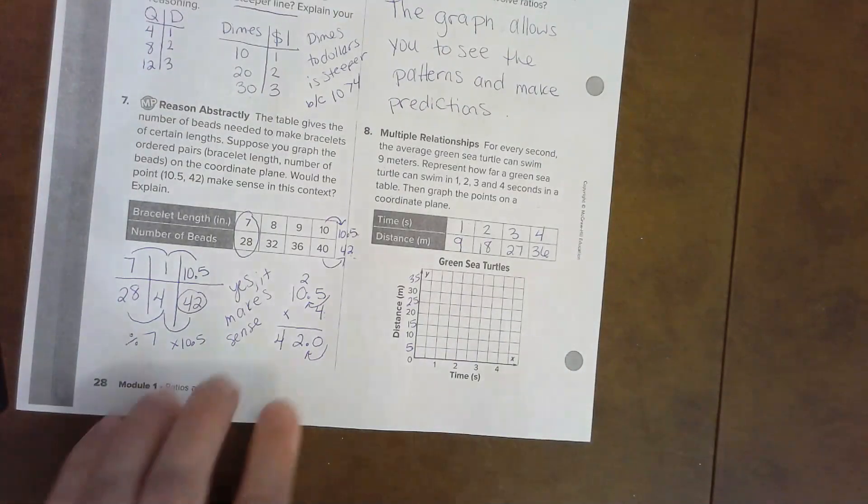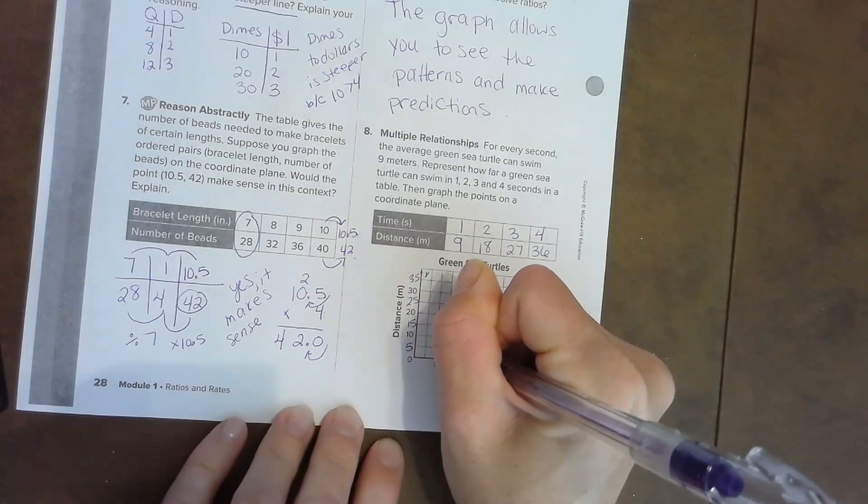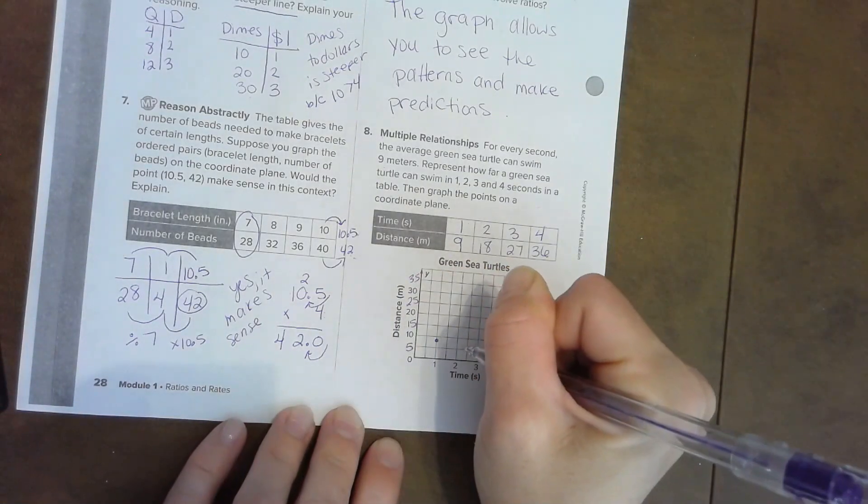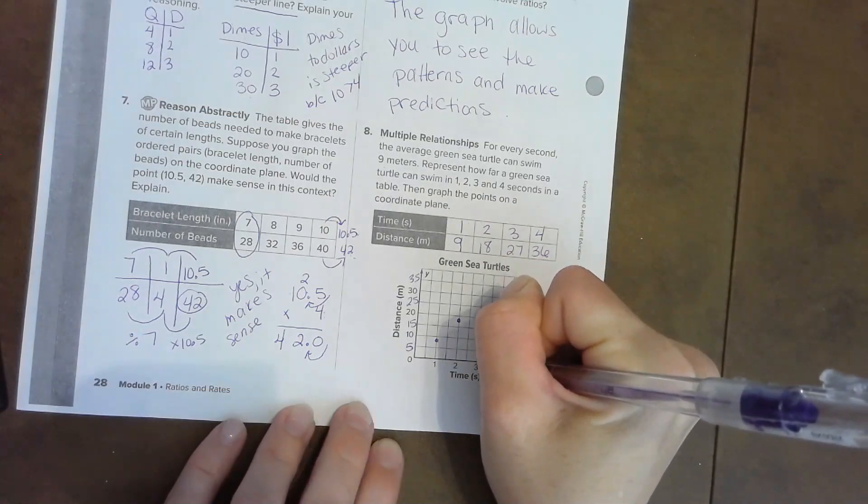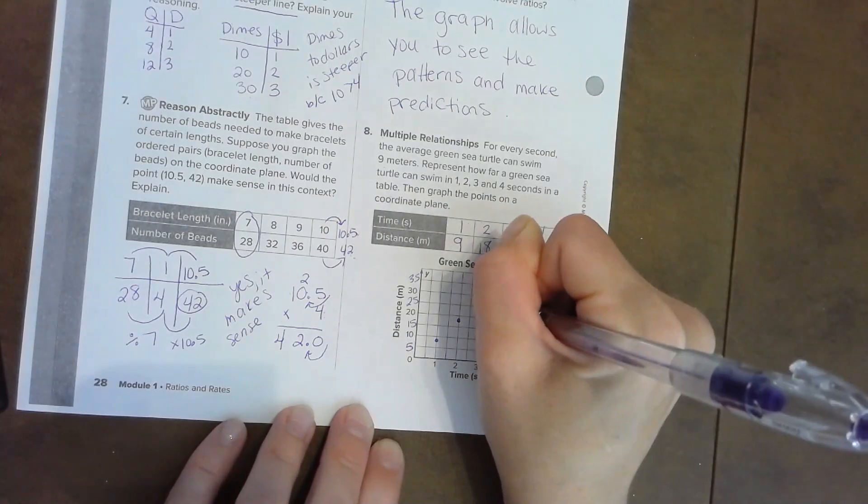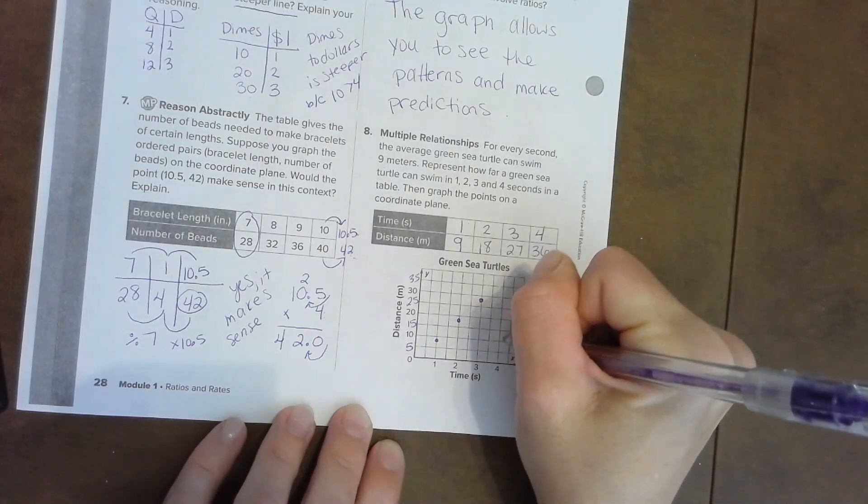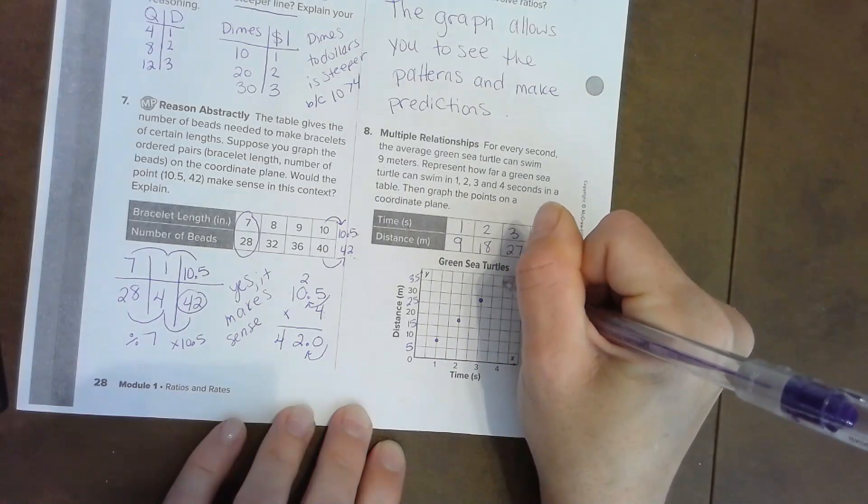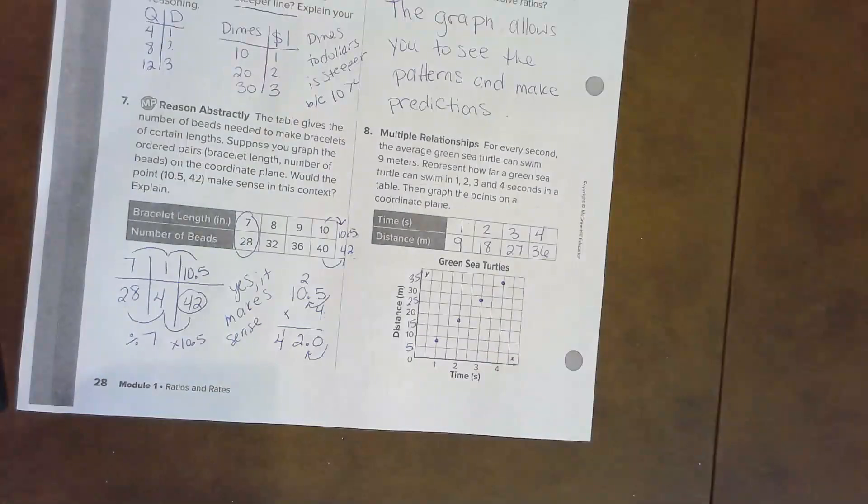Now let's plot our points. Go over to one, up to nine—it's just under the ten. Go over to two, up to eighteen—that's under the twenty. Over to three, up to twenty-seven—that's below the thirty. Over to four, up to thirty-six—that's just above the thirty-five.